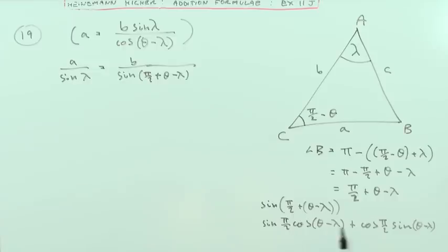Now the sine of pi upon 2, that's 90, that goes up to 1. Cos of pi upon 2, that's 90, it drops down to 0, that disappears. So that's just equal to the cos of theta minus lambda, I'll put plus 0.